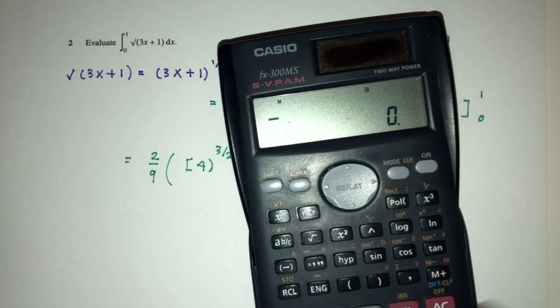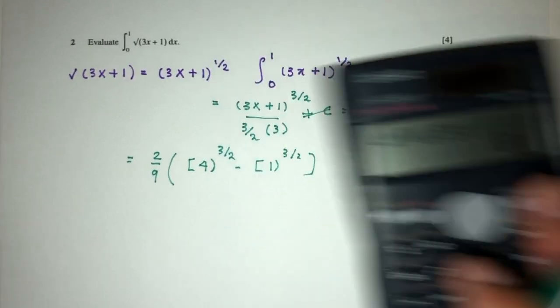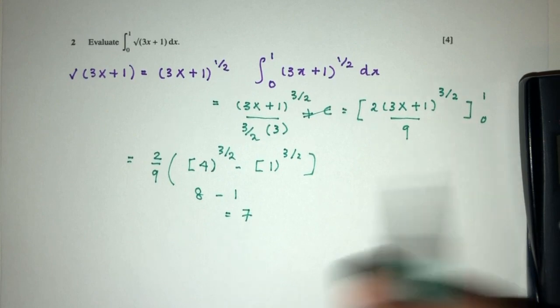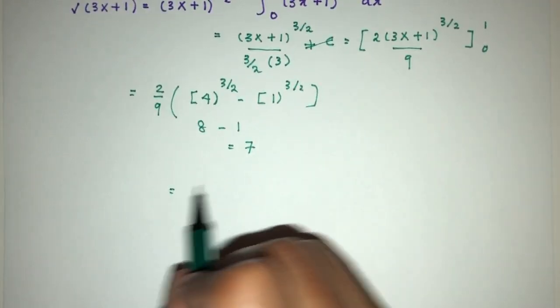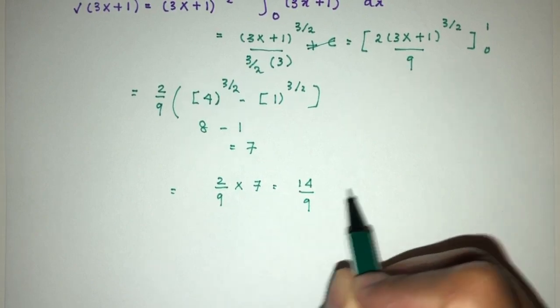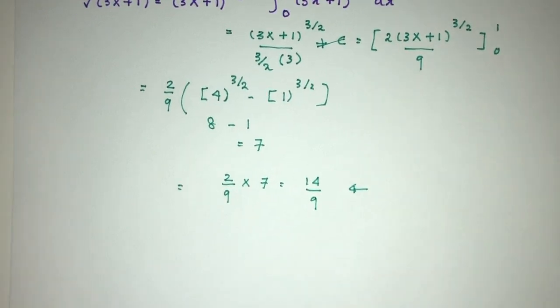So let's see what do we have. So 4 power 1.5, that will be 8. 8 minus 1, that will be 7. So your answer will be 2 over 9 times 7, that should be 14 over 9. Okay, and that will be this question.